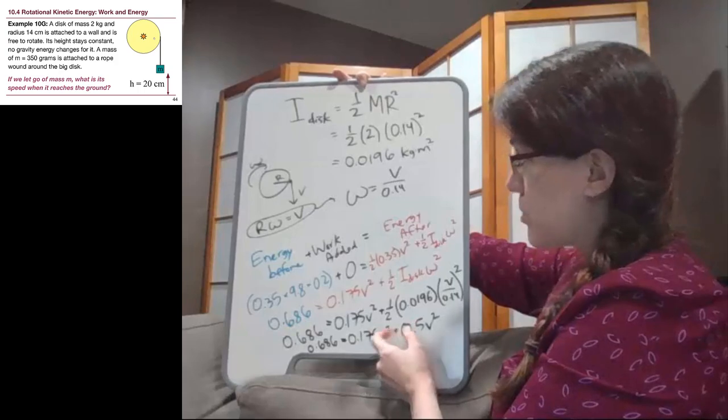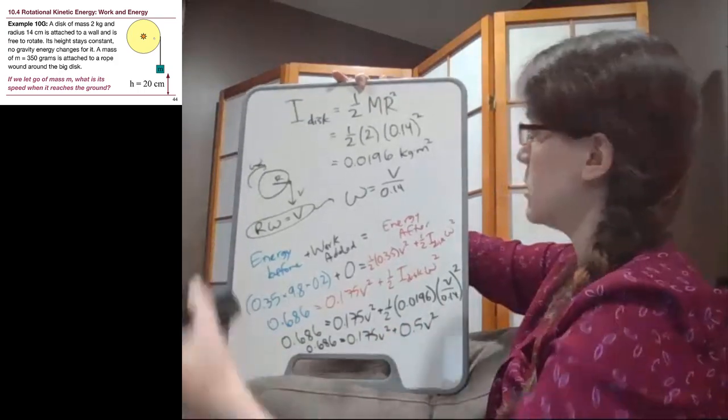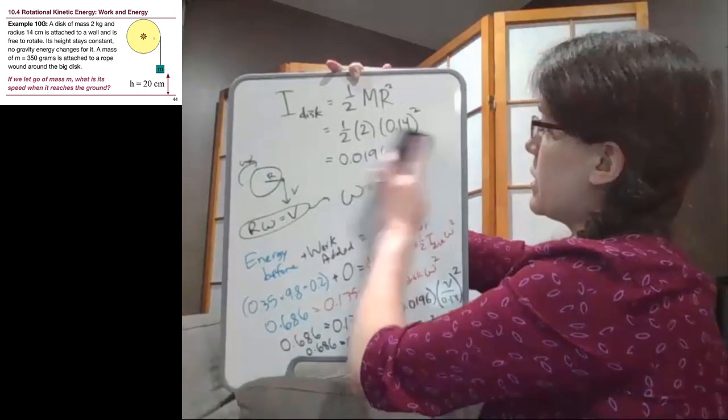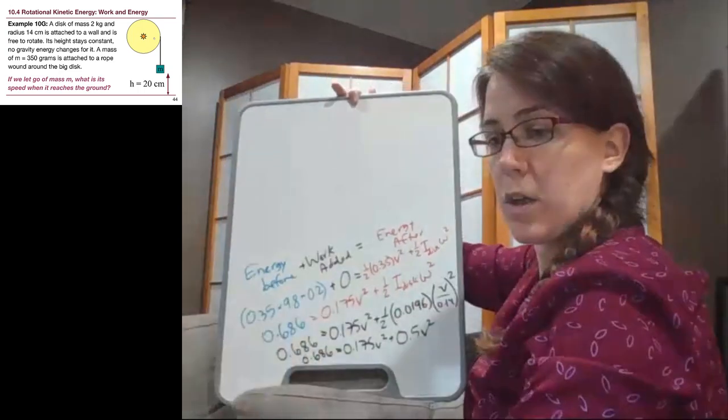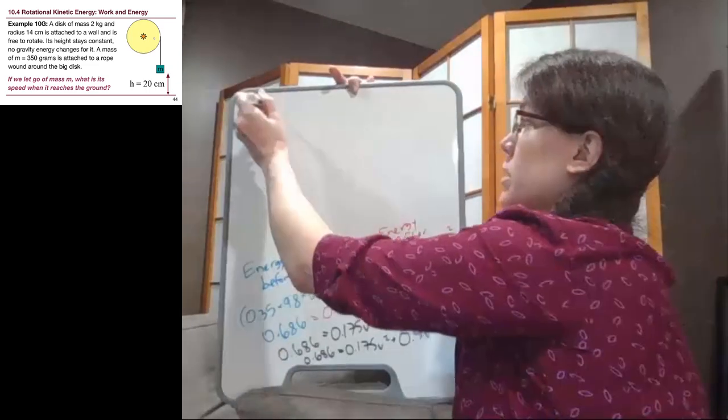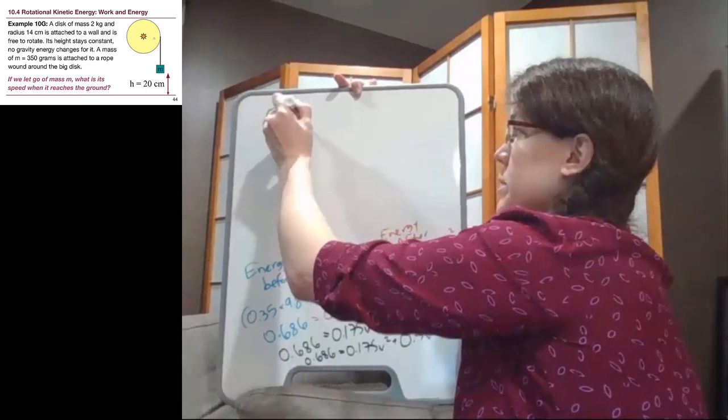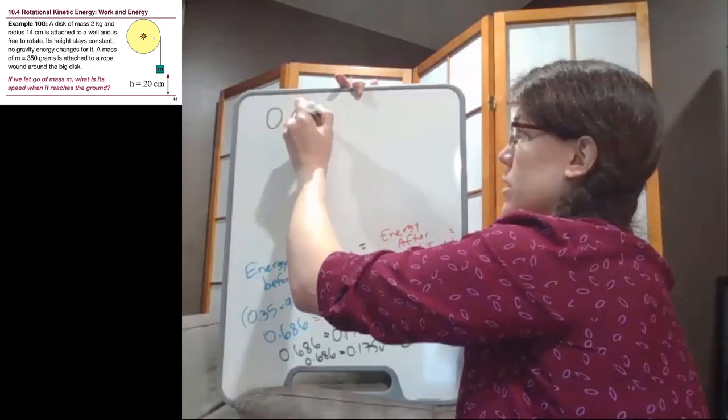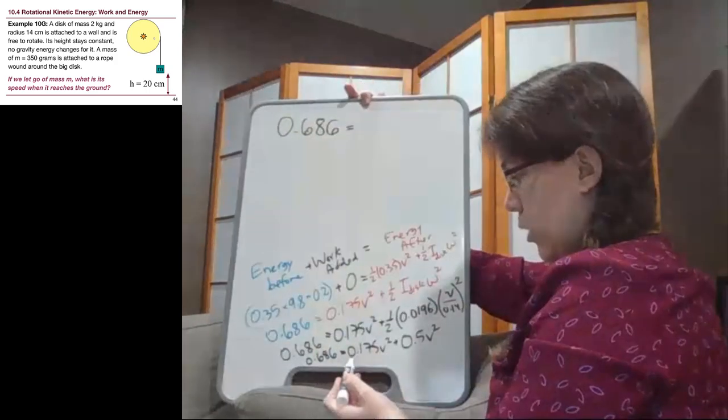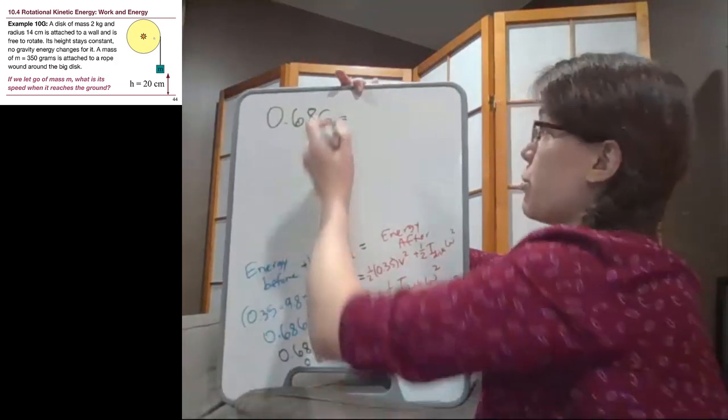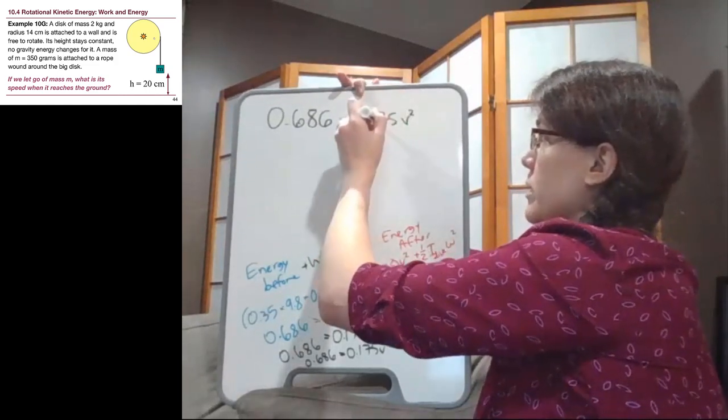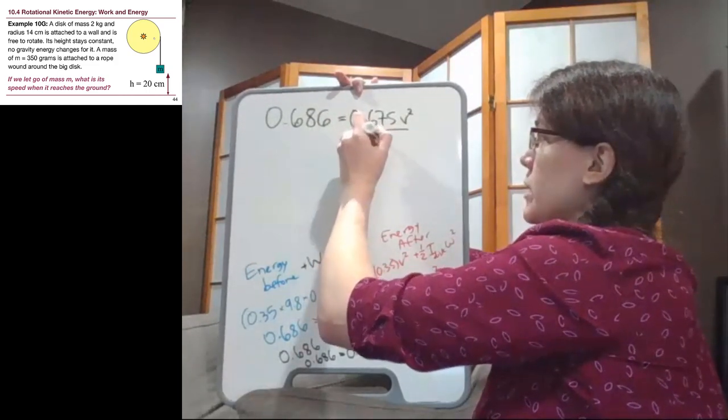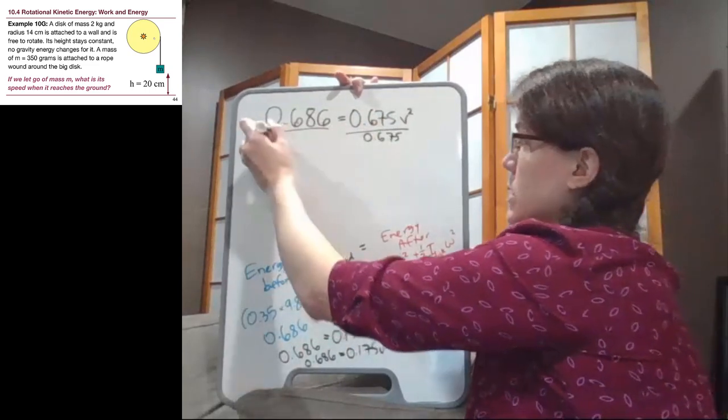So we combine these two terms on the side, and now I'm going to get our space back on the top here to finish. So we can combine those two terms on the right side, so 0.686 still on the left. And now 0.175 plus 0.5 is 0.675 v squared. So we divide by that on both sides.